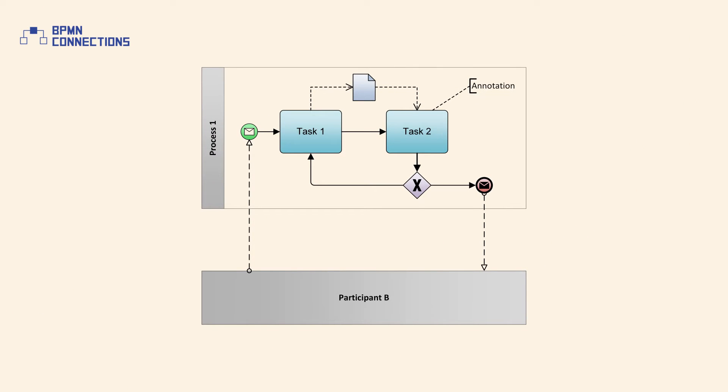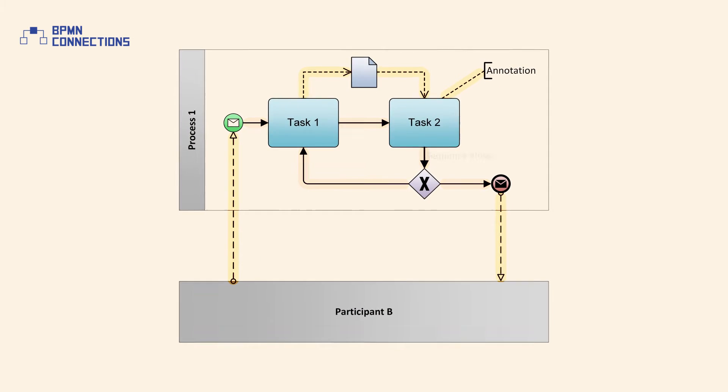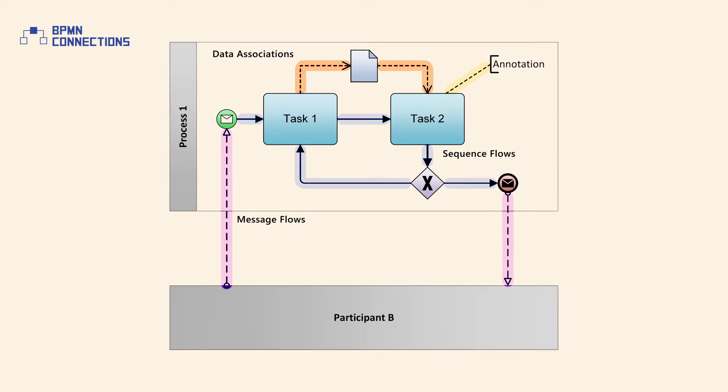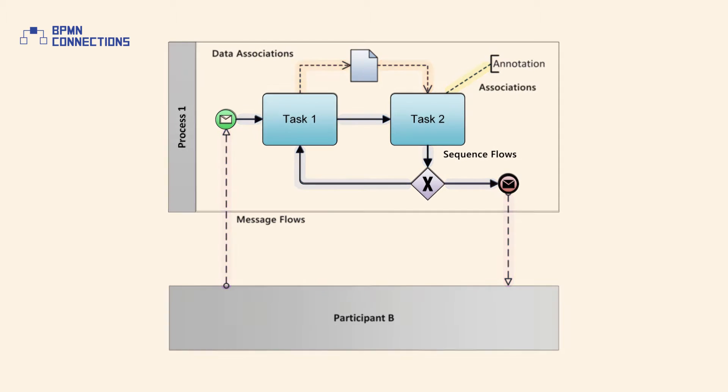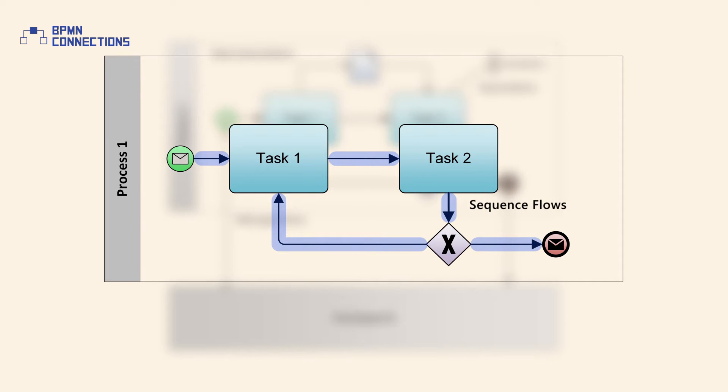BPMN diagrams consist of two main types of elements: nodes and connections. BPMN 2.0 defines four basic types of connecting objects: sequence flows, message flows, data associations, and associations. The most common connections are sequence flows, which are represented with